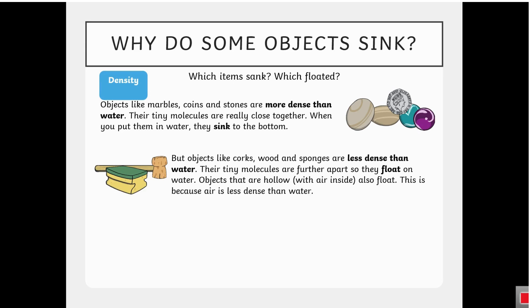But objects like corks, wood, and sponges are less dense than water. Their tiny molecules are further apart, so they float on water. Objects that are hollow, with air inside, also float. This is because air is less dense than water.